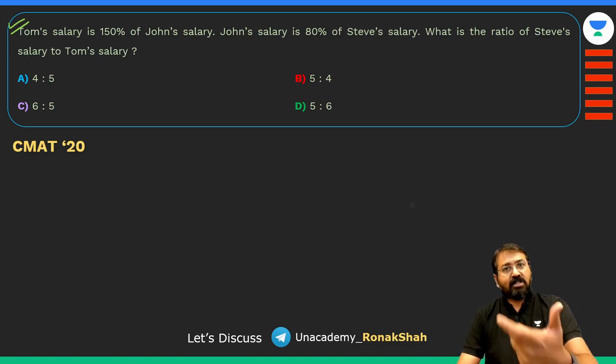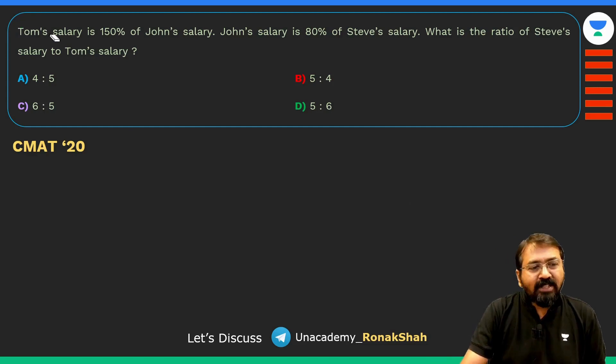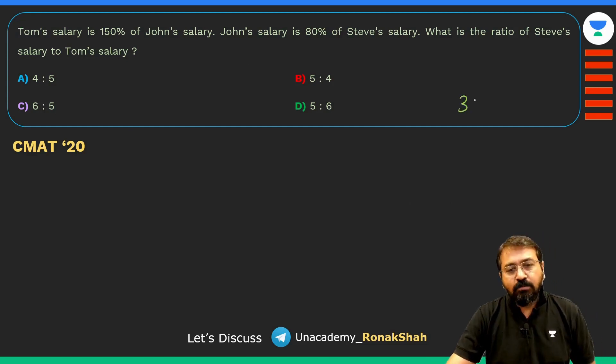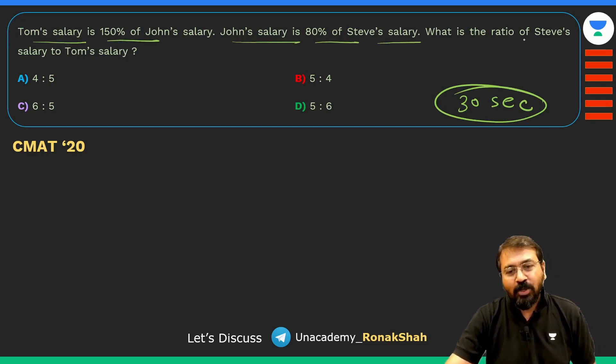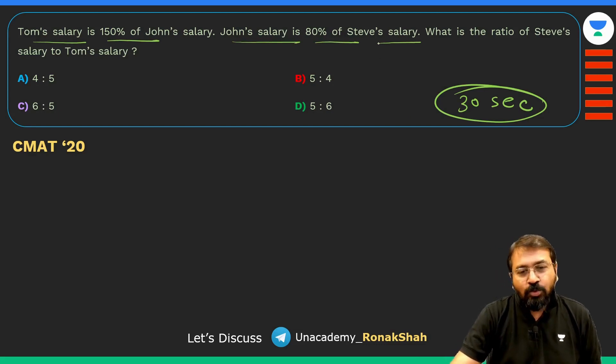Look at this question guys. It should not take more than 30 seconds for you to solve. Tom's salary is 150% of John's salary, John's salary is 80% of Steve's salary. What is the ratio of Steve's salary to Tom's salary? I can always start with the last person, that is Steve's salary.